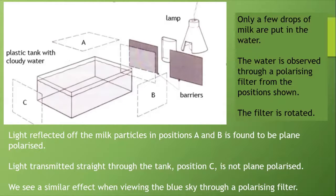What we find is interesting: light reflected off the milk particles in positions A and B is found to be plane polarized, or at least partially plane polarized. Light transmitted straight through the tank from position C is not plane polarized. We see a similar effect when viewing the blue sky through a polarizing filter, an activity I strongly encourage you to do.